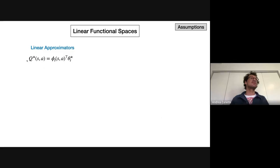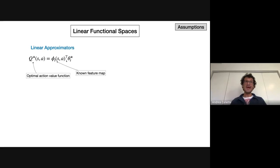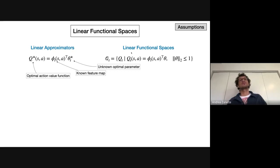What are those linear functional spaces? In general, the minimum assumption people make is some sort of approximate realizability — they assume the optimal value function for the optimal policy is linearly parametrizable as an inner product between a feature extractor (which you know and can compute at every state-action pair) and an unknown optimal parameter. The parameter is what you're trying to identify. Once you know the parameter, you know the Q-star values, and from those you know the optimal policy.